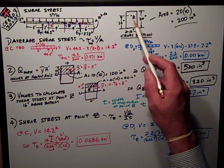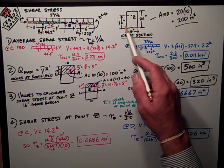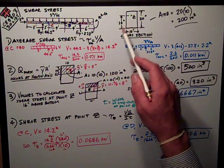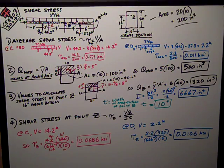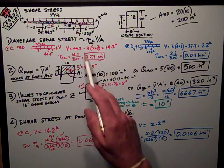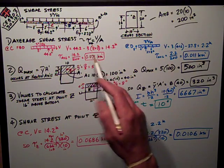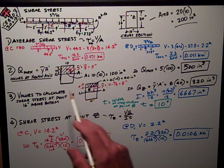The section was given to you as 10 by 20, and then we gave you a point 16 inches from the bottom called point Z. The first thing we wanted to know was the average shear stress, which is V over A, shear stress divided by area.